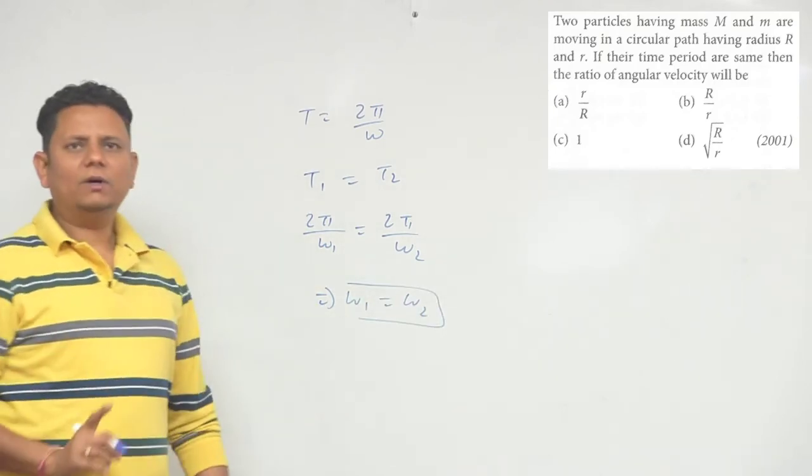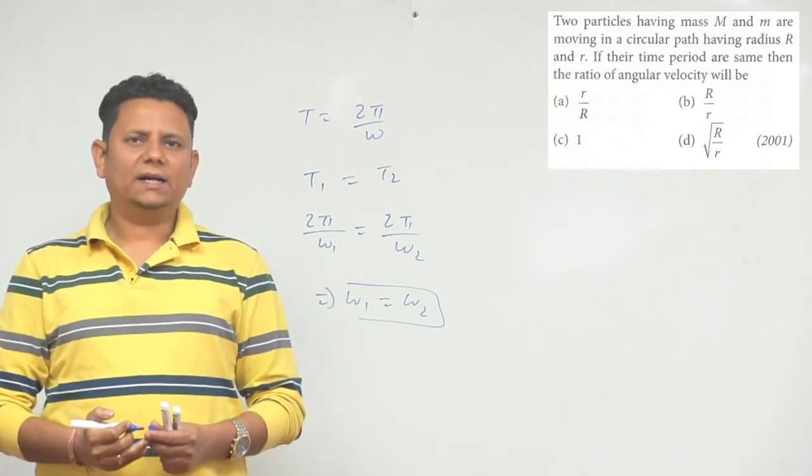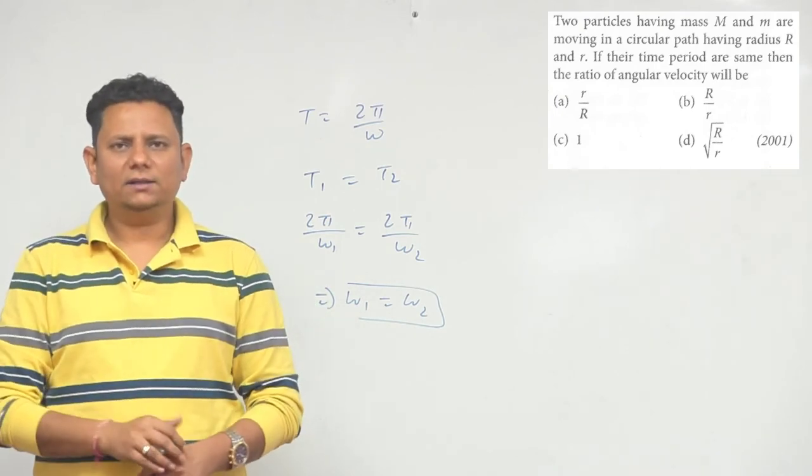So the ratio of these two will be 1. That means option number C would be the correct answer for this particular question.